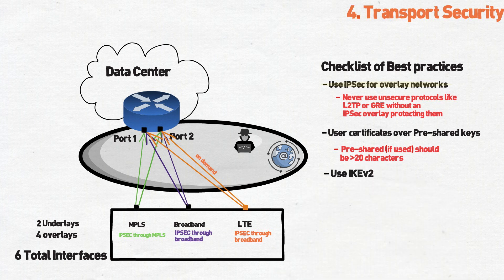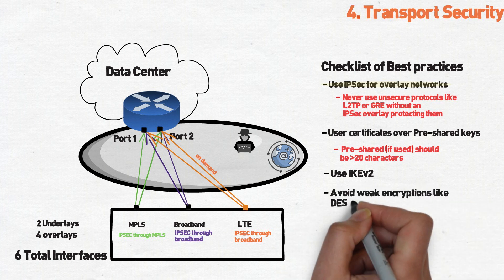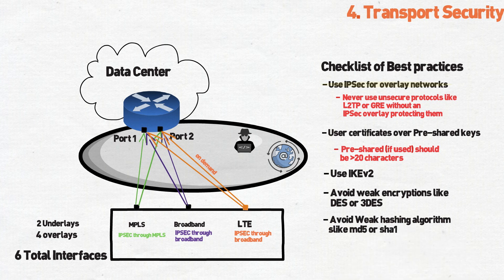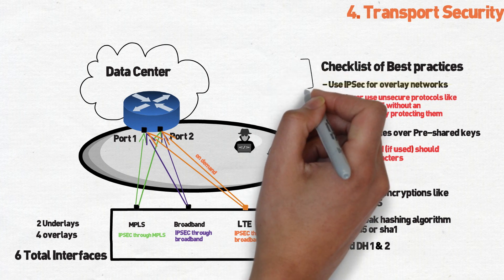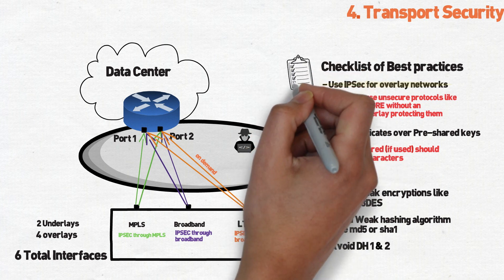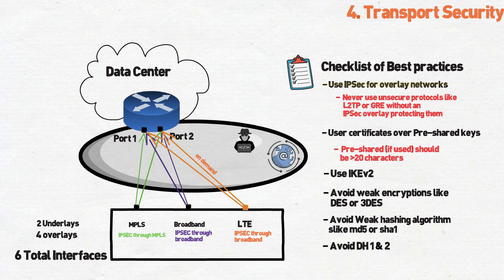Use IKE version 2 whenever possible. Avoid weak encryption methods like DES and triple DES. Avoid weak hashing algorithms like MD5 or SHA-1. And avoid Diffie-Hellman Groups 1 and 2. Don't assume these basic requirements are given on any modern SD-WAN vendor. Many of these vendors have actually simplified the deployment process to the point where basic IPsec changes are either impossible or difficult to do at scale.